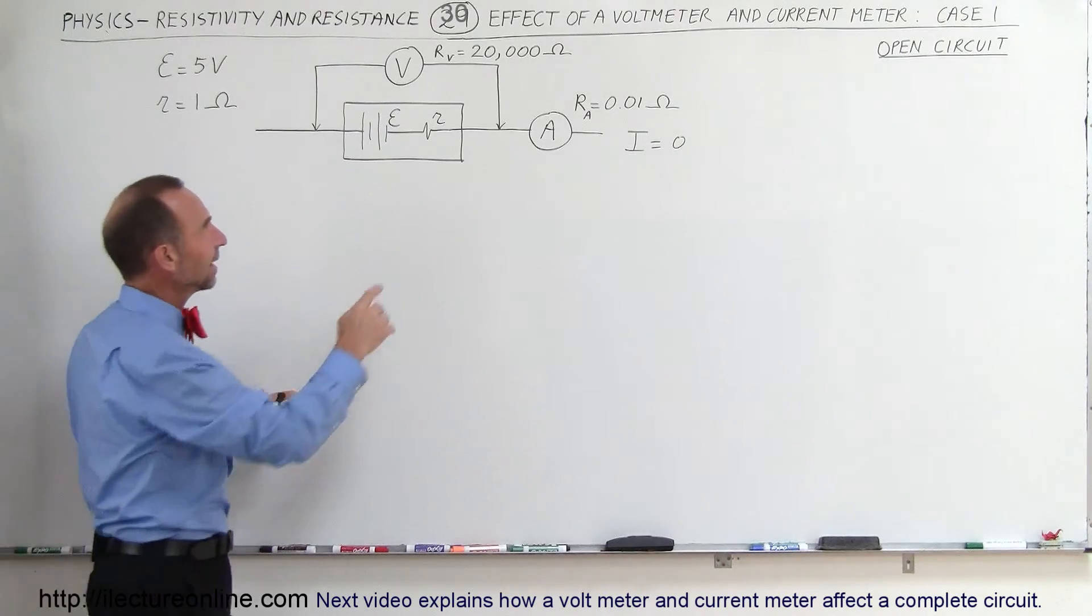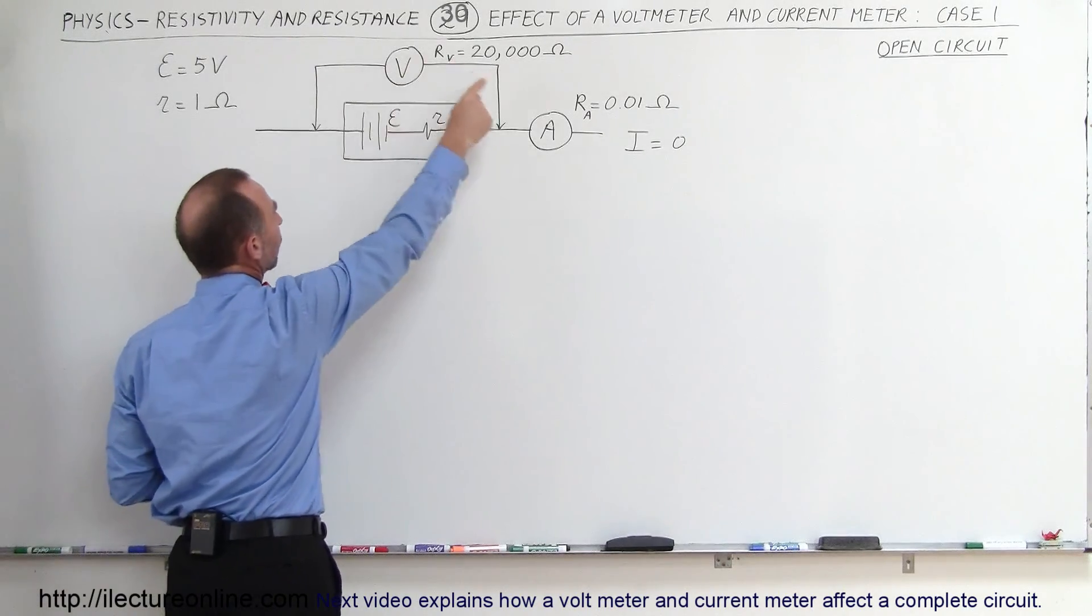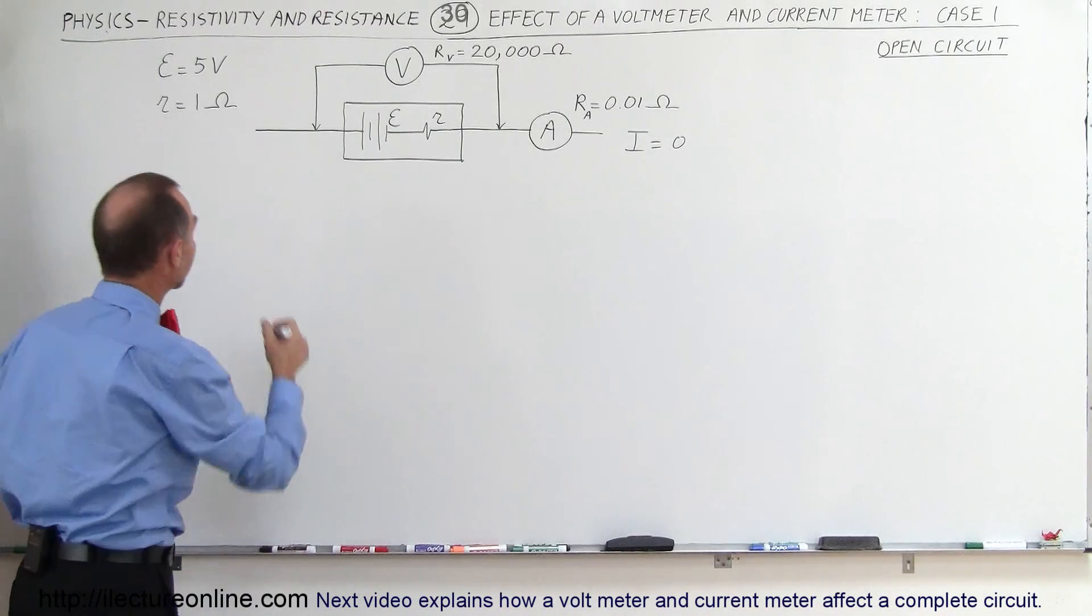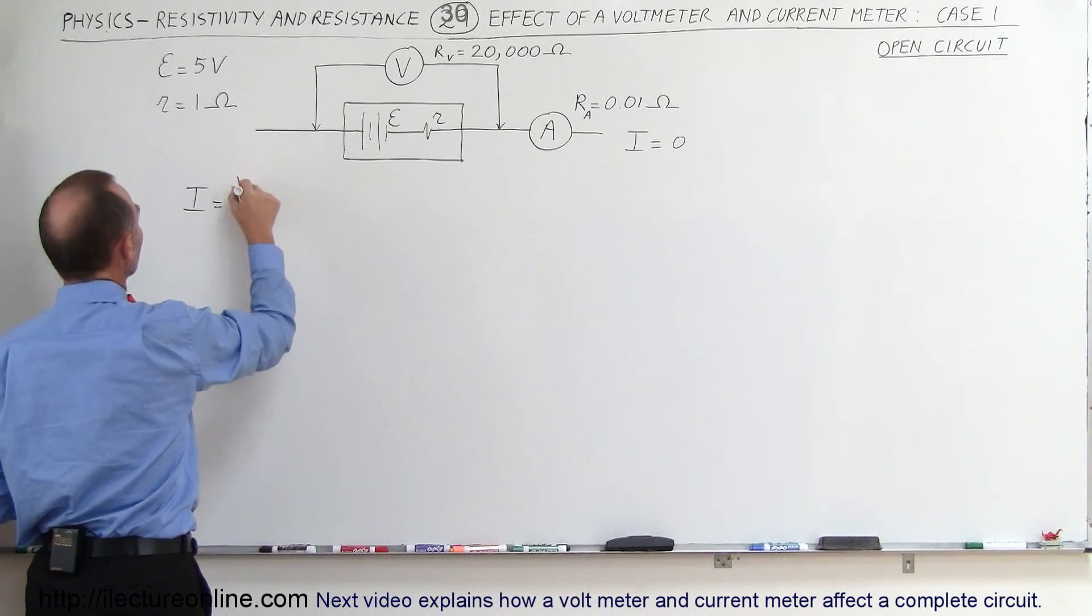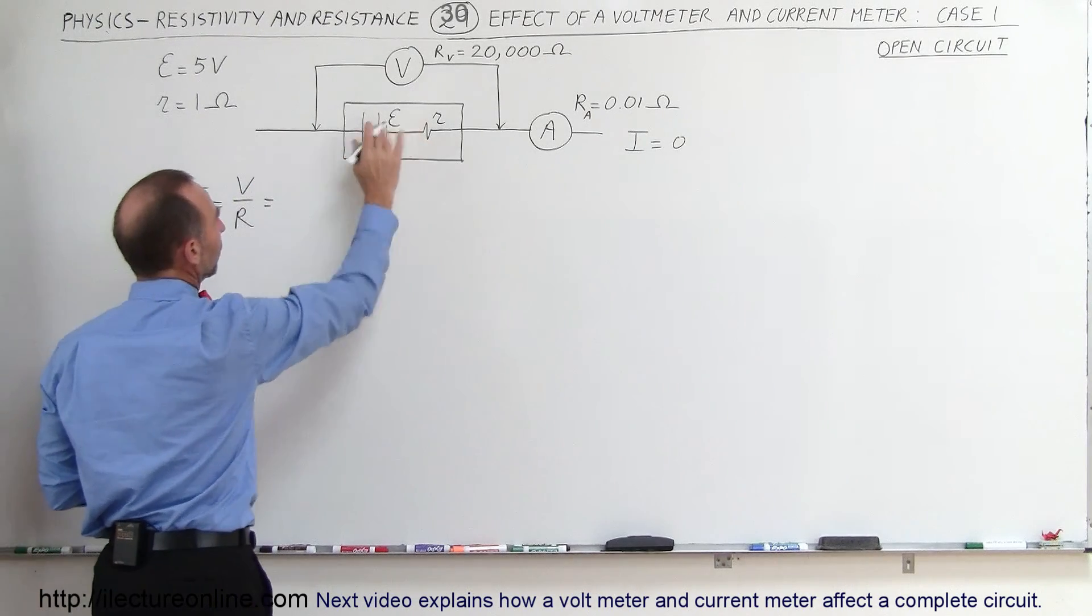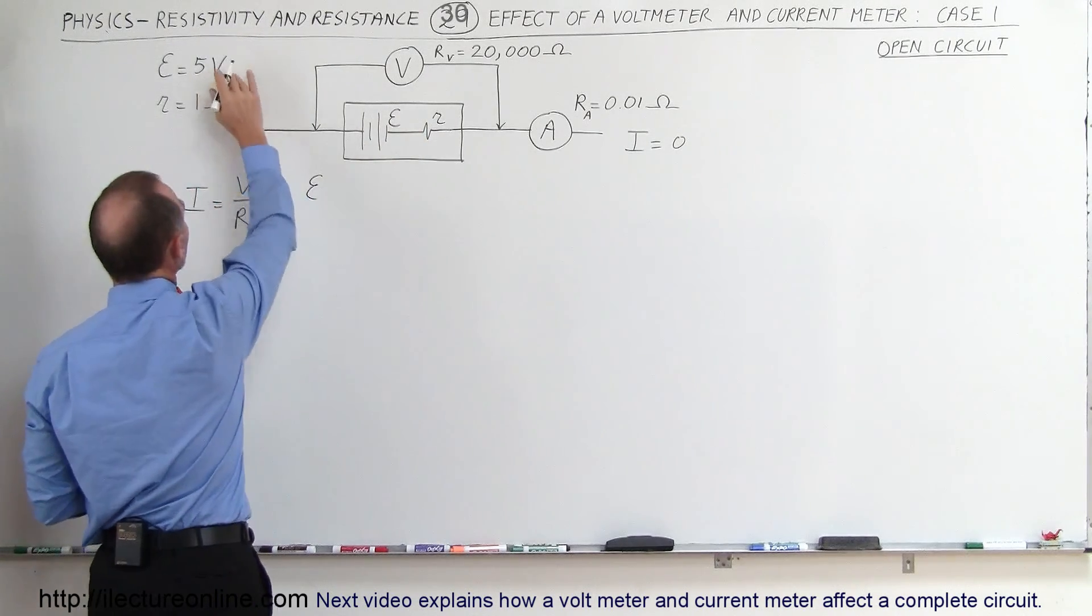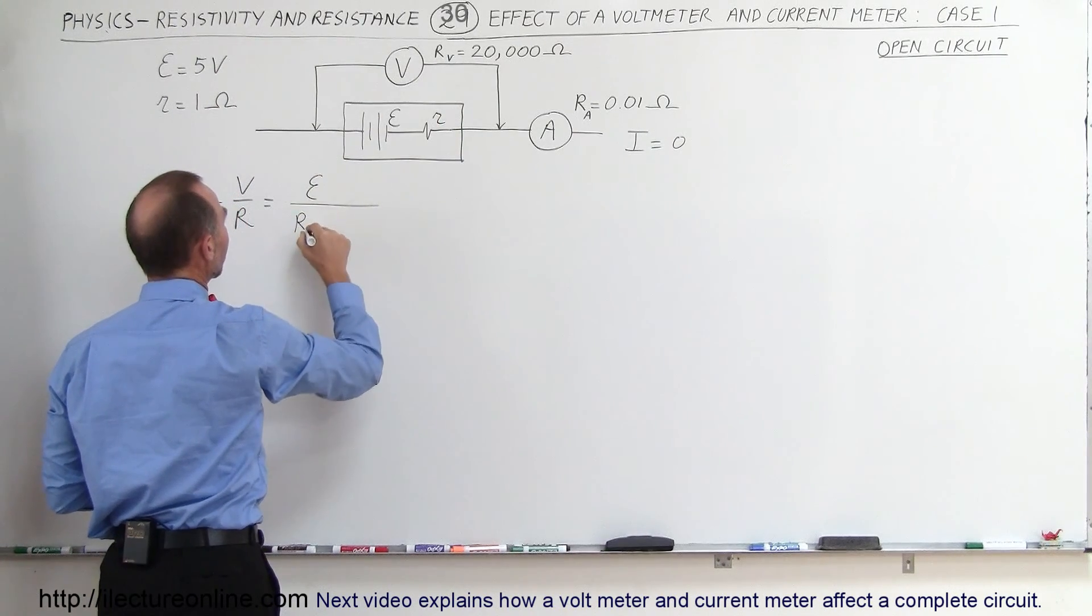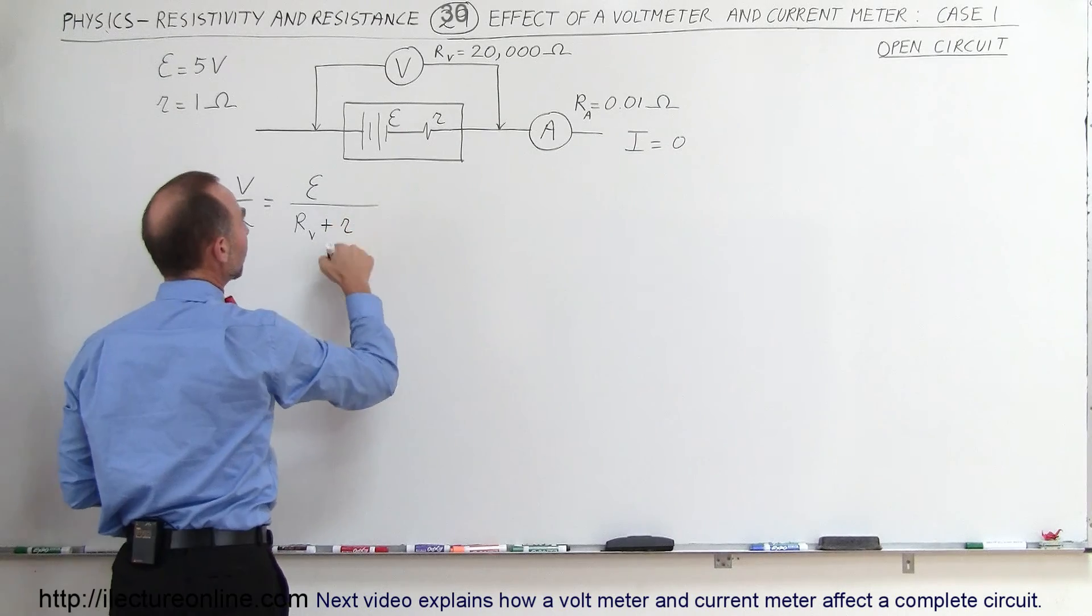So let's calculate the current in this portion of the circuit once we connect the voltmeter on there. Using Ohm's law, I equals V over R. The voltage provided in the circuit will be the EMF, which we define to be 5 volts, divided by the total resistance, which is the resistance of the voltmeter plus the internal resistance of the circuit.